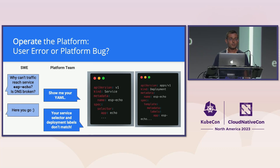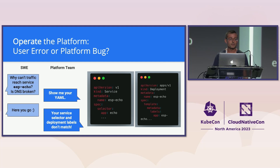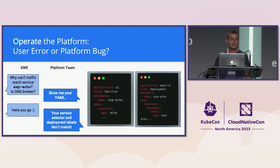One problem we hear from a lot of platform teams is they're overburdened trying to support their users. Here's a typical example: the software engineer deploys their application, tries to access the endpoint, and gets an error. They complain to the platform team who investigates, and upon investigating, they realize it's user error — in this case, the team misconfigured their service selector and it doesn't match their pods.